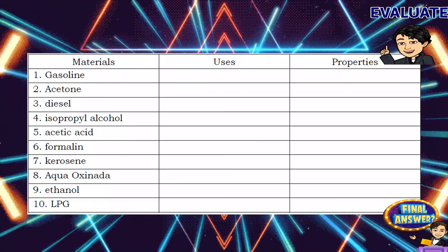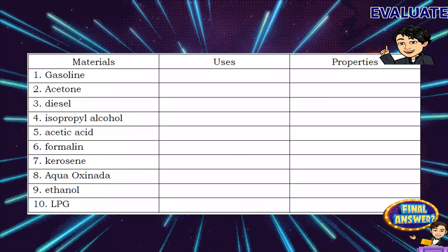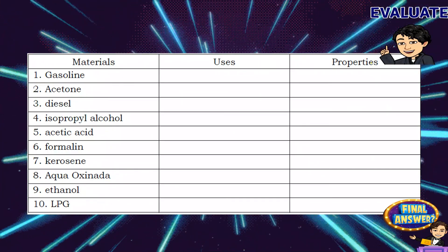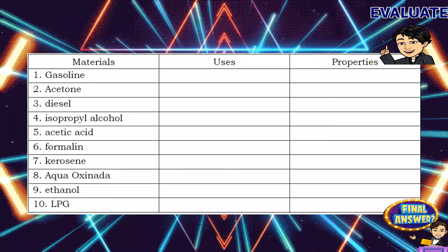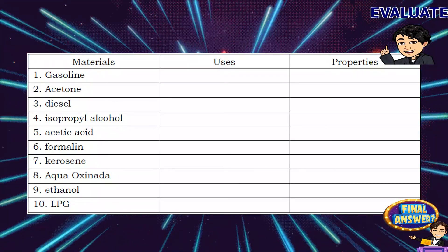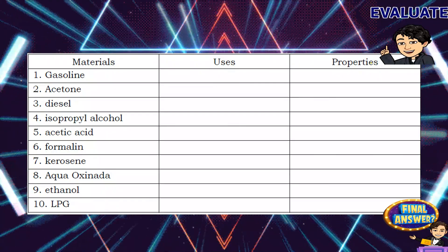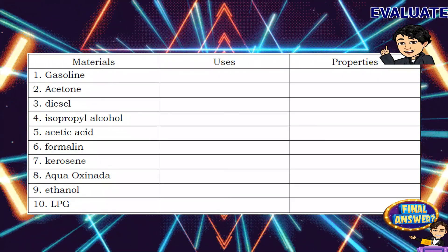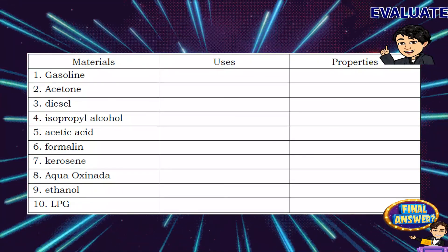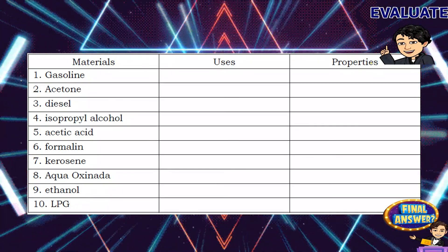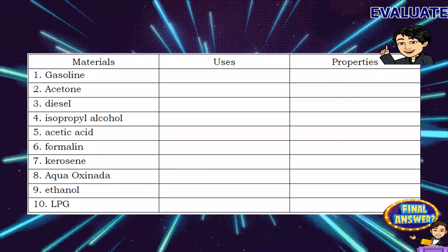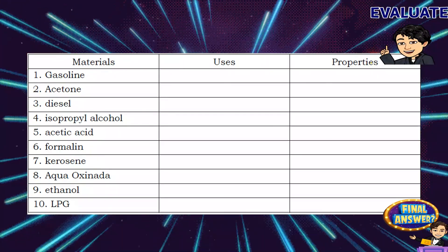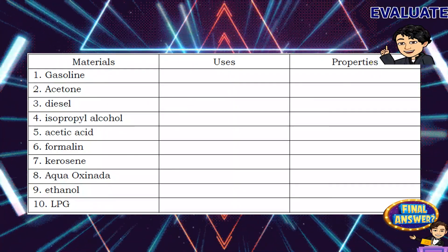Now try to identify the uses and properties of the following organic compounds: gasoline, acetone, diesel, isopropyl alcohol, acetic acid, formalin, kerosine, agua oxenada, ethanol, and LPG. You may pause the video while answering and press play when you're done to check your answer.